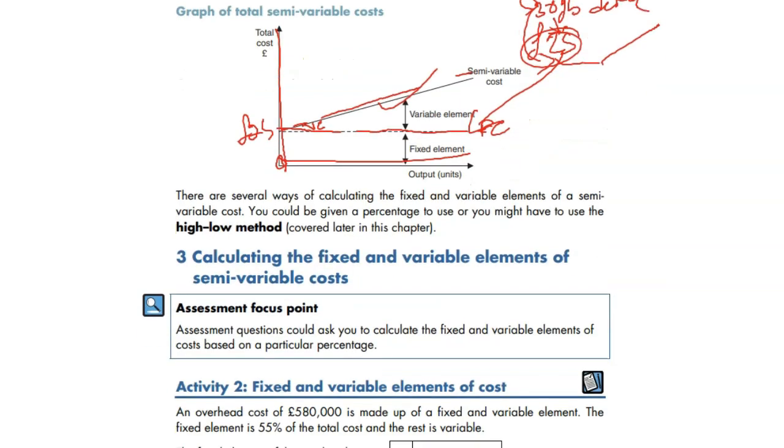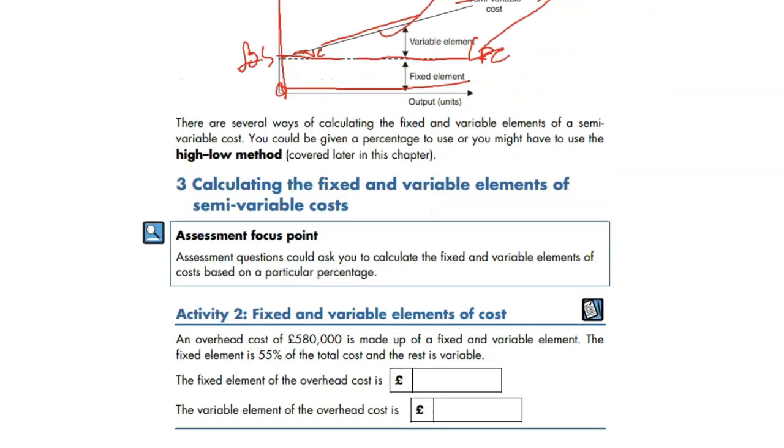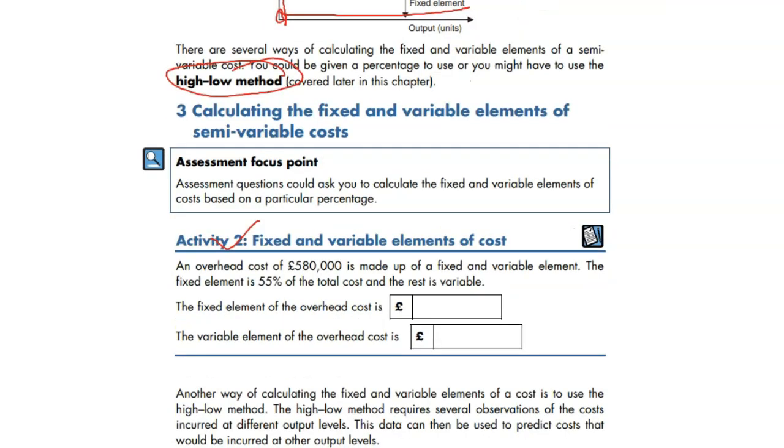This is one way of calculating your fixed and variable cost. We have an activity, going to check it out. Another method is called high-low method. We're going to check out in the next video, a very important one that comes in the exam. I have seen it quite a lot of times.